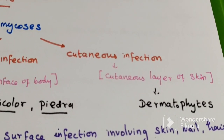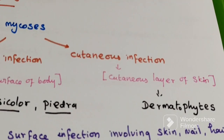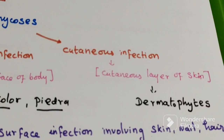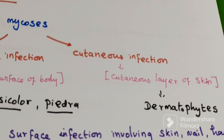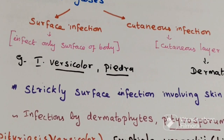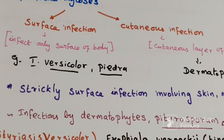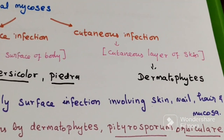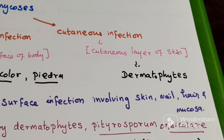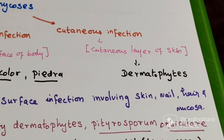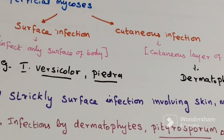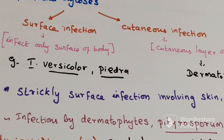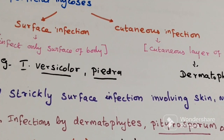Next, cutaneous infection — the fungus can go up to the subcutaneous layer of skin. Example: dermatophytes. This superficial mycosis is strictly a surface infection. It mainly causes infection in skin, hair, nail, and mucosa. These include infection by dermatophytes.